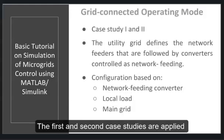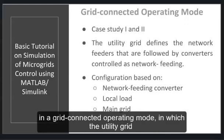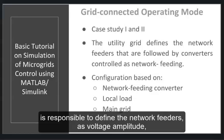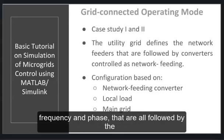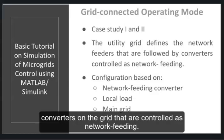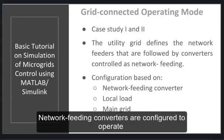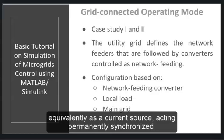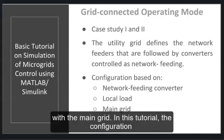The first and second case studies are applied in a grid-connected operating mode in which the utility is responsible for defining the network feeders — voltage amplitude, frequency, and phase — which are all followed by the converters on the grid that are controlled as network feeding. Network feeding converters are configured to operate equivalently as a current source, acting permanently synchronized with the main grid.